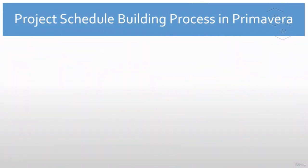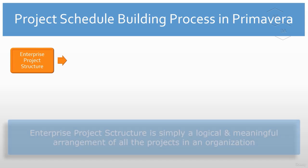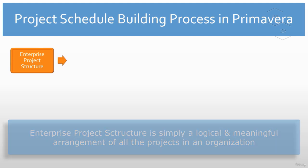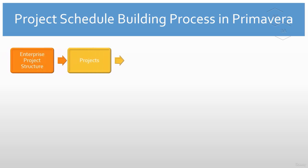Let's understand this process step by step. We will create the enterprise project structure in Primavera P6 if it's not created previously. Enterprise project structure is simply a logical and meaningful arrangement of all the projects in your organization. As a first step, after the EPS, we will create a project in the Primavera P6 database.